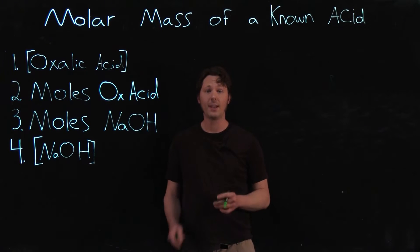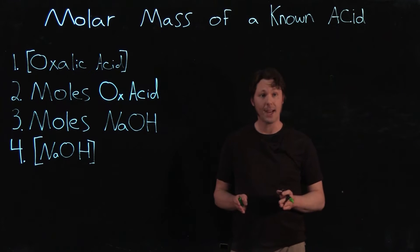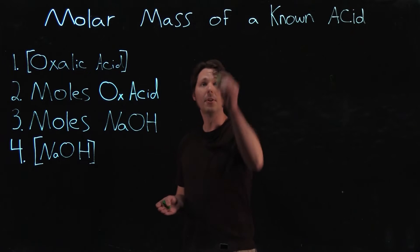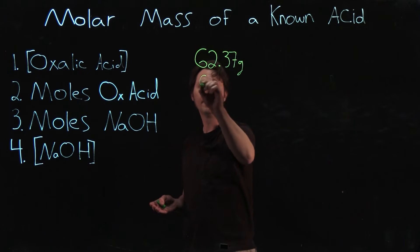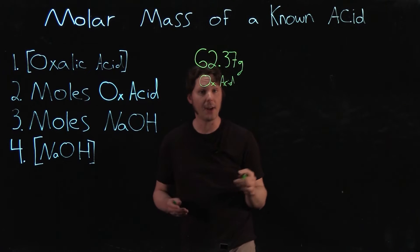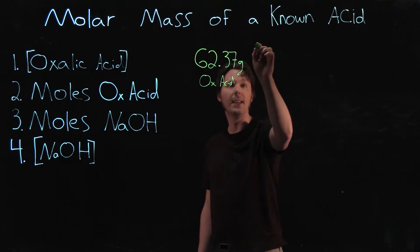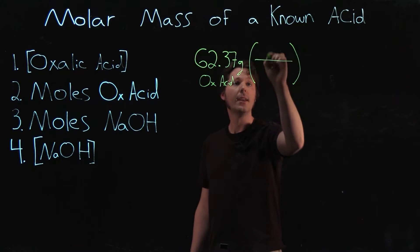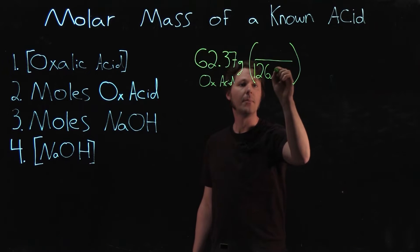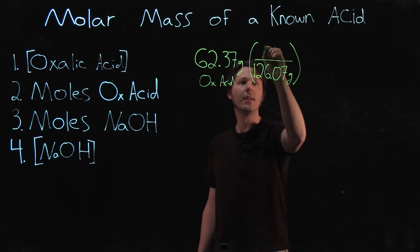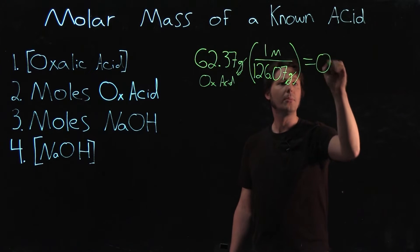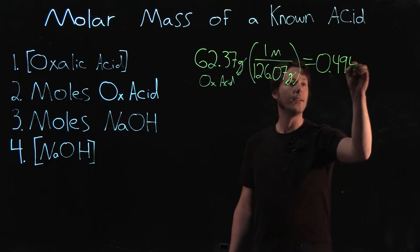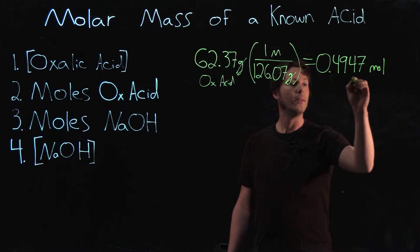For the first of these four calculations, we're going to take the grams of oxalic acid used and use oxalic acid's molar mass to convert those grams into moles, then divide the moles by the solution's volume to get the concentration in moles per liter. For example, if you used 62.37 grams of oxalic acid, we multiply by the inverse of oxalic acid's molar mass, which is 126.07 grams per mole. Grams cancel, leaving us with 0.4947 moles of oxalic acid.